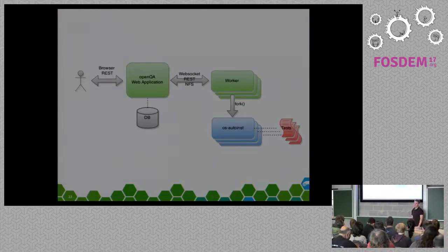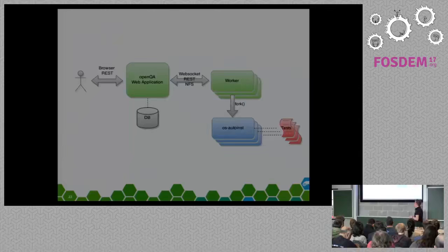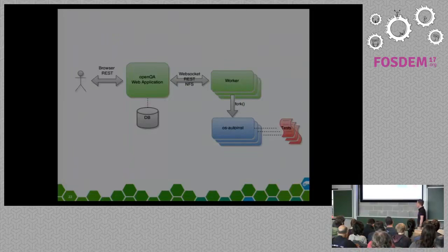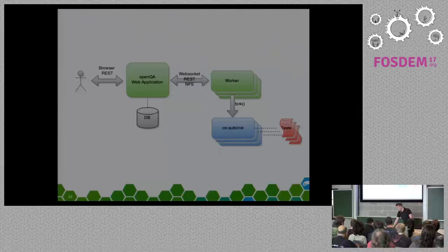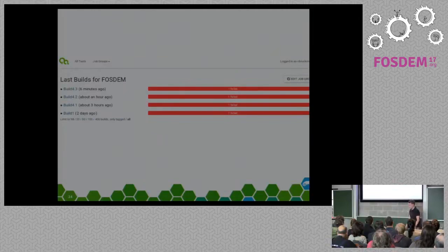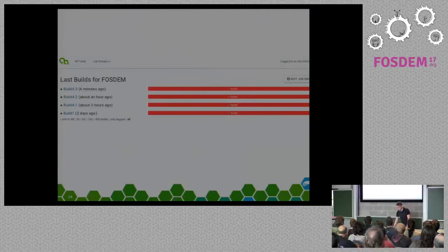OpenQA is basically a web frontend which has a database, and then you have several workers which run the OS Auto Installer and which run different tests. This has several backends — mostly we use QEMU to boot the images and run the tests, but you can also run on real hardware via IPMI or with libvirt. The web frontend looks like this — that was yesterday evening, so I tried some stuff and everything failed.